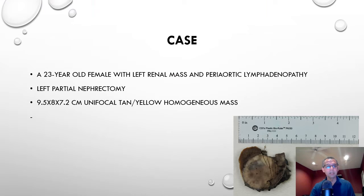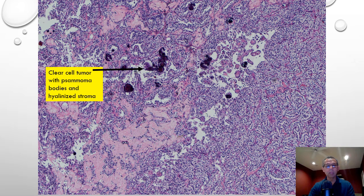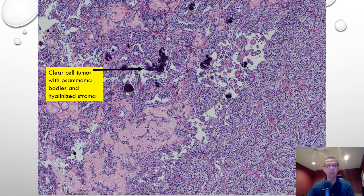Let me start with a very interesting case that I recently encountered: a 23-year-old female with a left renal mass and periaortic lymphadenopathy. The patient had a 9.5 centimeter unifocal tan-yellow homogeneous mass involving the kidney. As seen here, the tumor is relatively homogeneous as well as circumscribed. On microscopic examination, the predominant morphology was acini and nests lined by clear cell cytoplasm. There were focal areas of stromal hyalinization and numerous areas showing dystrophic psammomatous-type calcifications, a very helpful feature.